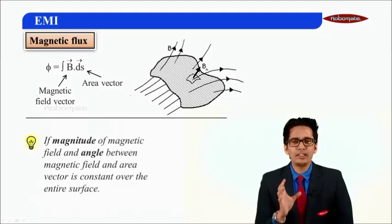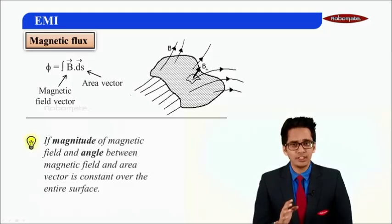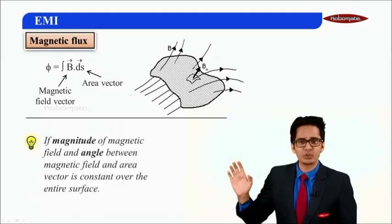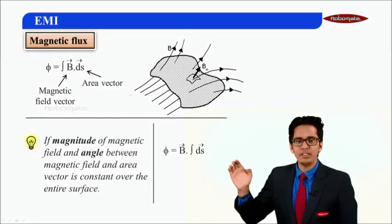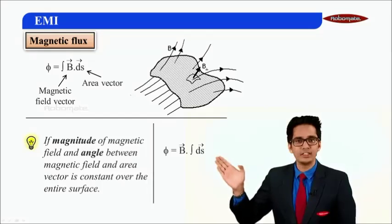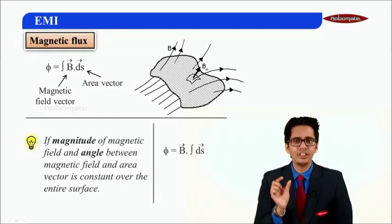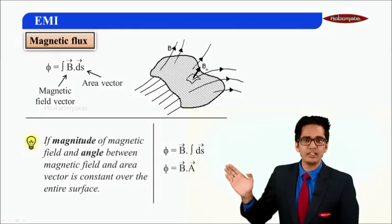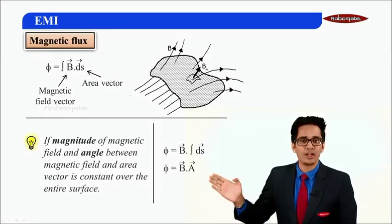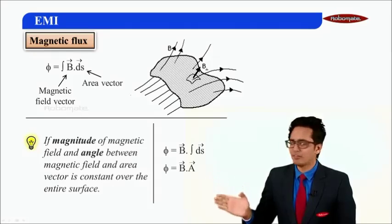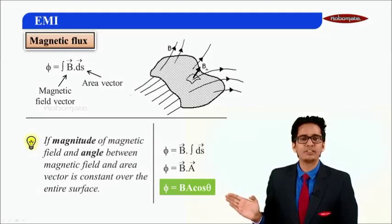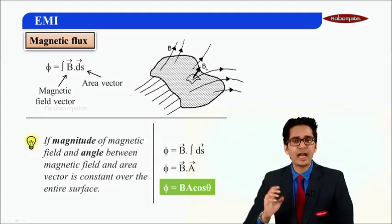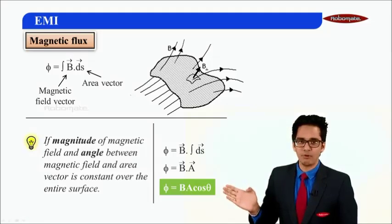If the magnitude of magnetic field B is constant, and also the angle between B and the area is constant, then we can simplify our equation. Flux = ∫B·ds → since B is constant, B can be taken out of the integral, giving B·∫ds. Integrating ds gives the area vector A, so flux = B·A. Since the angle is constant, we can also write flux = BA cos θ.